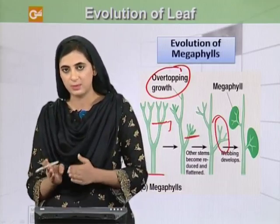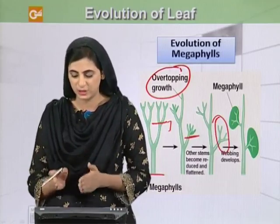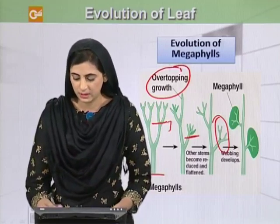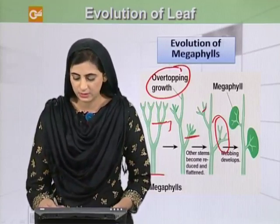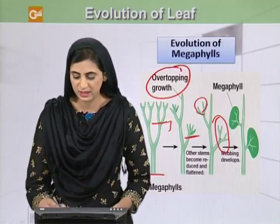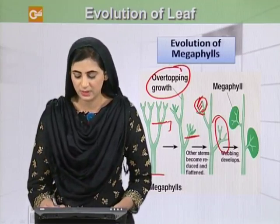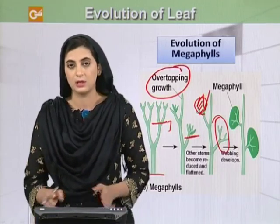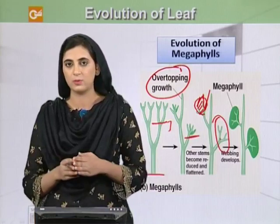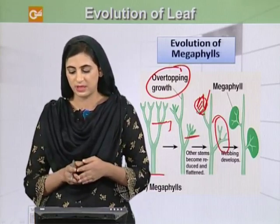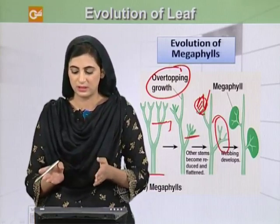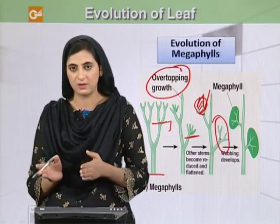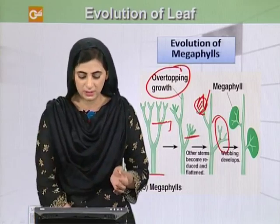The second process was called planation. After planation, parenchyma cells developed to fill in this region, and these branches were then developed into veins, providing the vascular supply for these leaves. That is how these megaphylls or leaves developed.